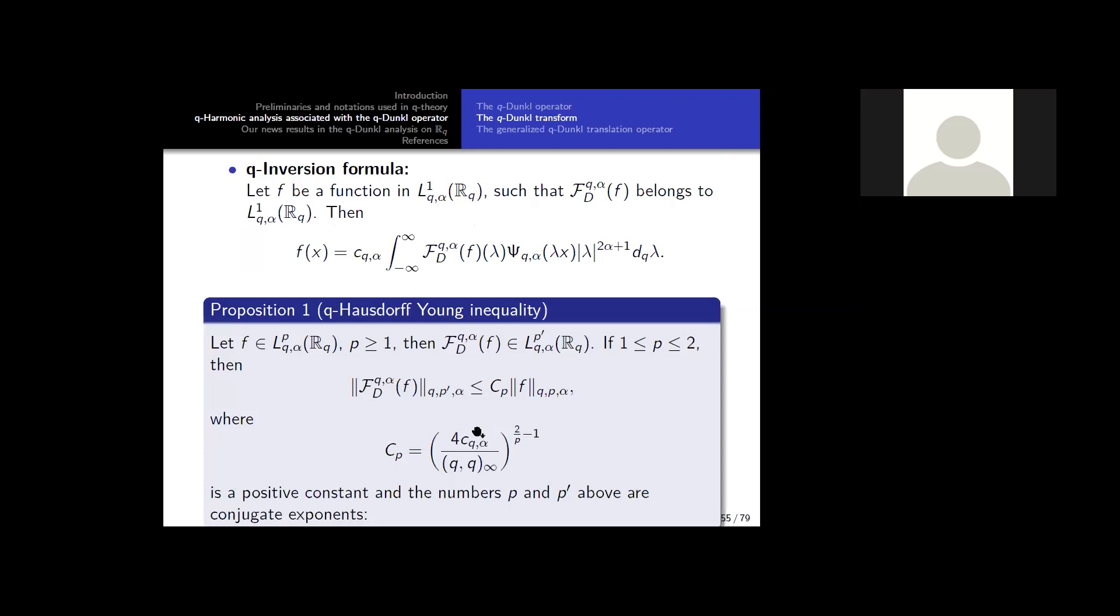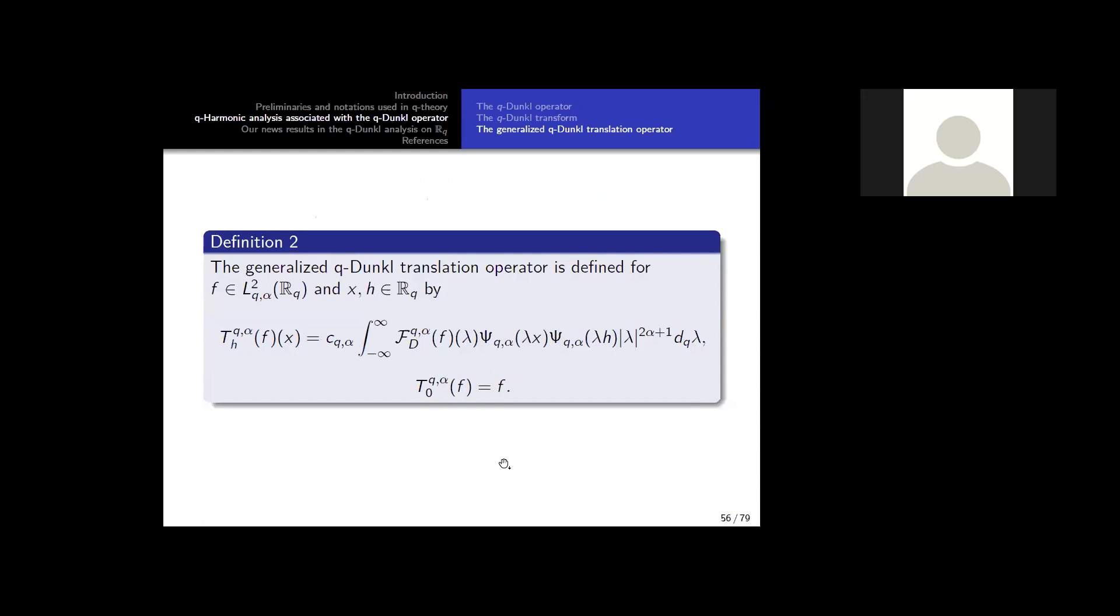So in our results, we did a Q-analog of the Hausdorff-Young inequality. There is some constant, an analog of this. And the generalization, we have also some analog of the translation operator.